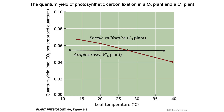Photorespiration increases with temperature in C3 plants, and the energy cost of net CO2 fixation increases accordingly. This higher energy cost is reflected in lower quantum yields at higher temperatures. In contrast, photorespiration is very low in C4 plants, and the quantum yield does not show a temperature dependence. Note that C3 plants are more efficient than C4 plants at lower temperatures.